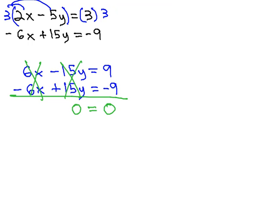All the variables had subtracted out. What does this mean about the problem? How often does 0 equal 0? Always. 0 is always equal to 0. What this tells us about our system is if I have a pair of numbers that works in the first set of equations, it will also work in the second set of equations.